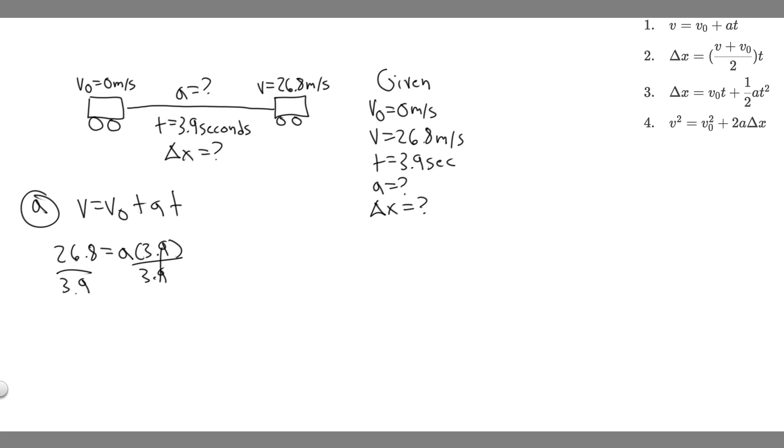So you do 26.8 divided by 3.9, and you're going to get A equals 6.87. And then the units for acceleration, since we're using meters and seconds, it's meters per second squared. So 6.87 meters per second squared, this is going to be your acceleration.